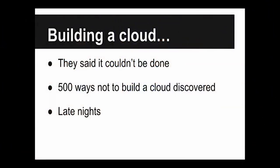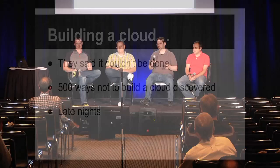We started talking to vendors and one literally told us on the phone we were crazy and it couldn't be done — which really encouraged us. We tried to divide and conquer: Zach takes Glance, Justin takes Nova, I take Cinder, Matt gets Neutron. That doesn't work — you can't hover over one component, get it done, and sync back up later. We found about 500 ways not to build OpenStack. We iterated really fast, and when something didn't work we just trashed it, started over, took notes, and tried again.